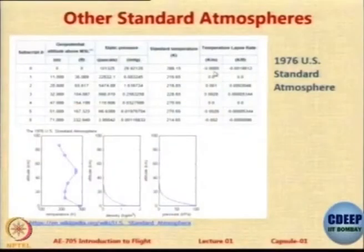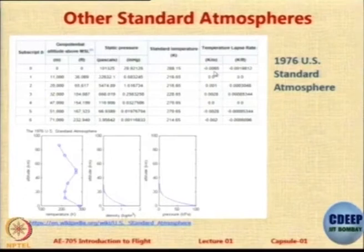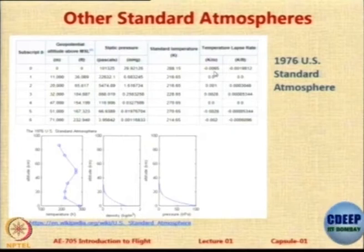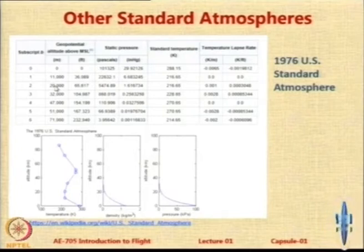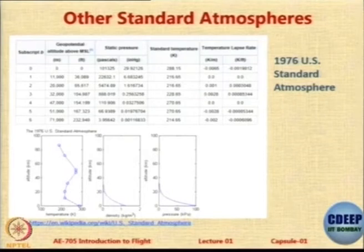ISA is not the only atmosphere, so let us look at some other atmospheres. First of all, let us look at the atmosphere that is applicable in the US. You have 288.16 K or 15°C at sea level and their lapse rate is 6.5, which is what we know, and then there is 0 lapse rate between 11 to 36,000 feet or 11 to 20,000 meters. But in ISA this is constant to 25 km; in the US atmosphere it is up to 20 km, so you can see there are minor differences.